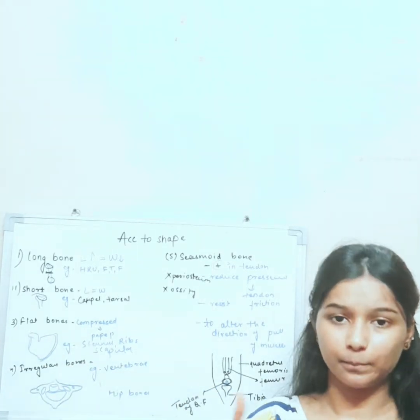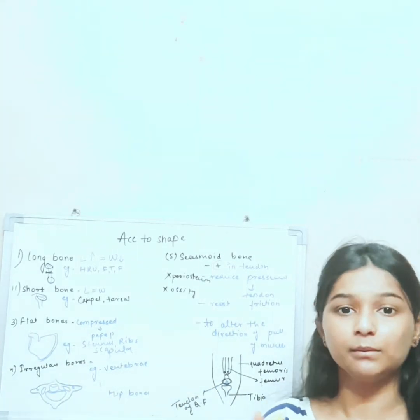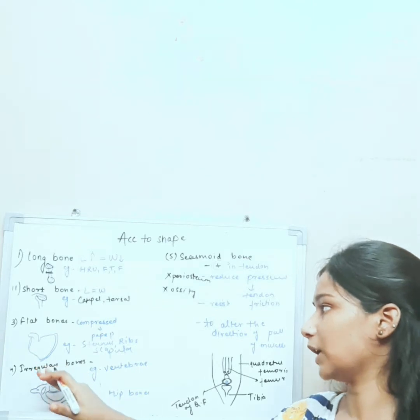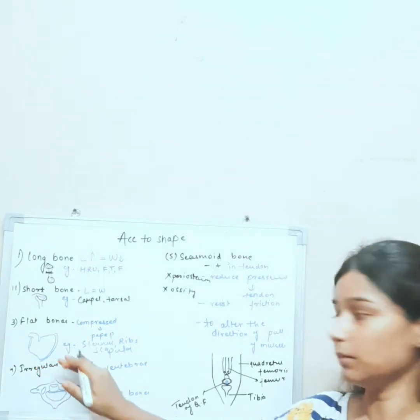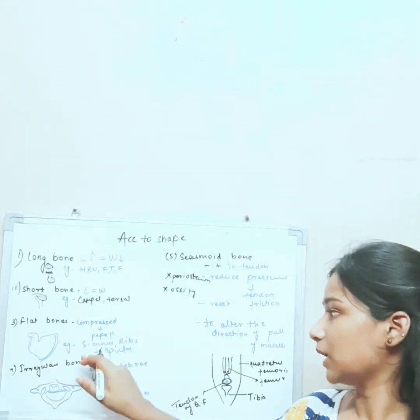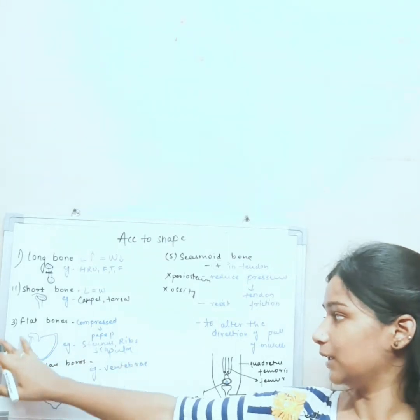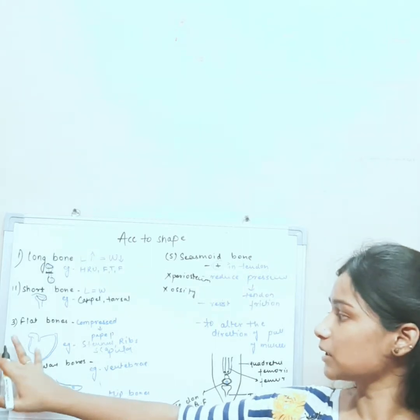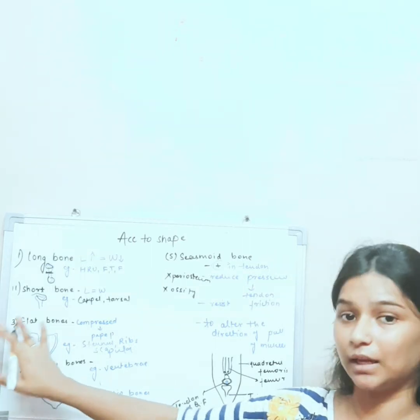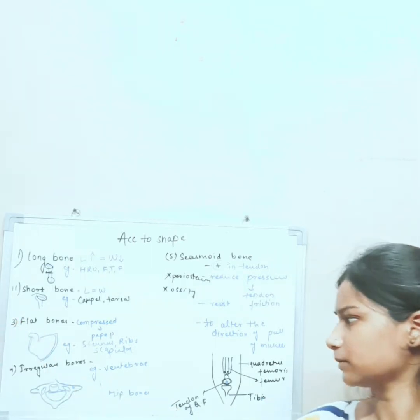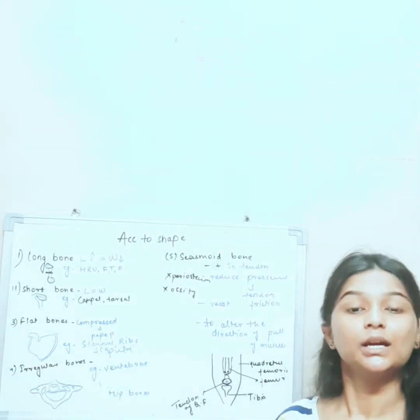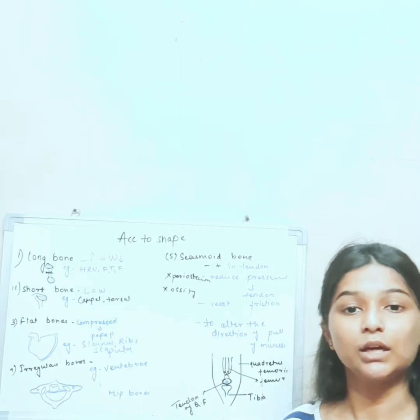Flat bones are those bones which are compressed like paper. Examples of flat bones are the sternum, ribs, and scapula. As you can see in the diagram of the scapula here, it is compressed like paper.